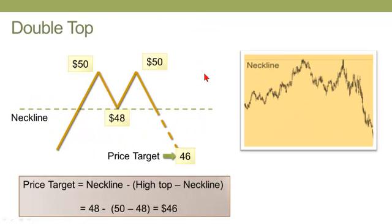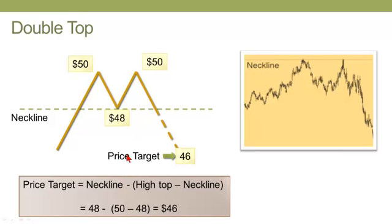Then there's the double top variation. This time there's no head, but a bounce at $50 back to a neckline of $48, bouncing back up to a second top — hence the double top of $50 — and then that pattern reversing the upward trend into a downward trend. One approach to setting the price target, analogous to the head and shoulders, is taking the neckline of $48 and subtracting the difference between the top and the neckline of $2, giving a price target of $46.